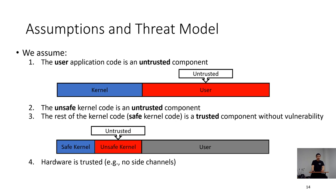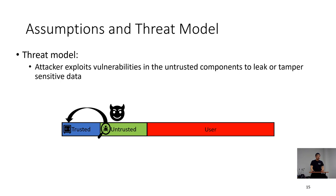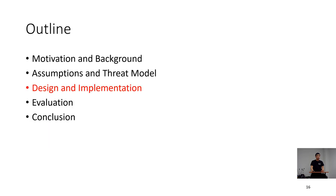While designing our isolation scheme, we made assumptions and a threat model. We assumed that the user application code is an untrusted component, and the unsafe kernel code is an untrusted component. The rest of the kernel code is a trusted component without vulnerability. We also assumed that hardware is trusted, so there are no side channels. Our threat model is that an attacker exploits vulnerabilities in the untrusted components to leak or tamper sensitive data.